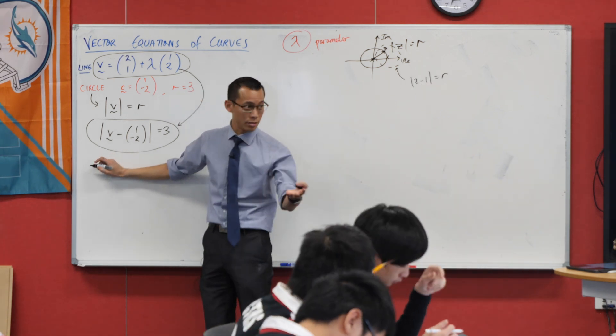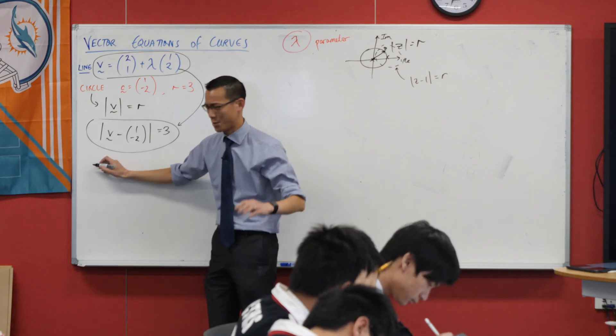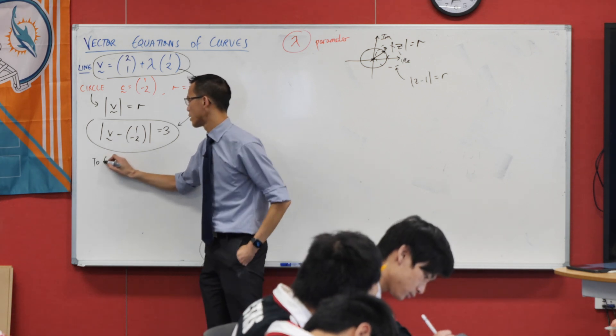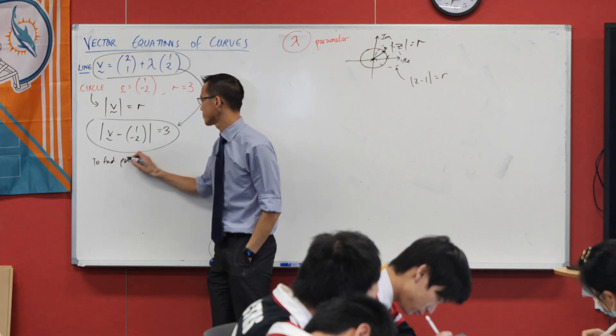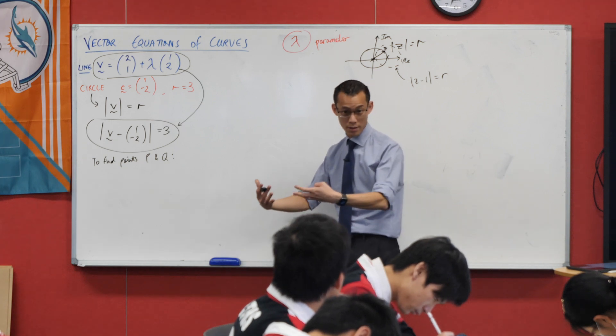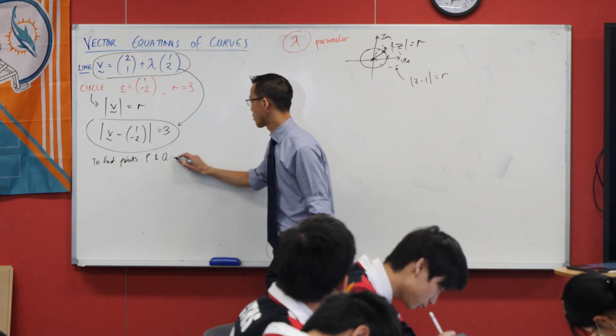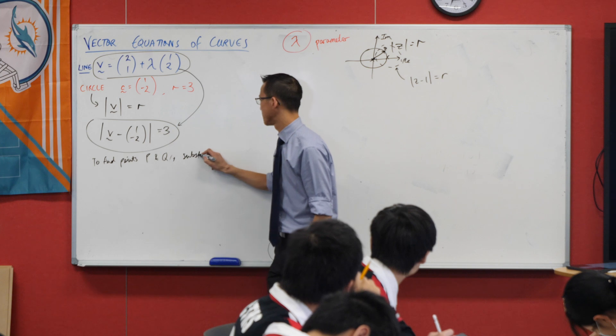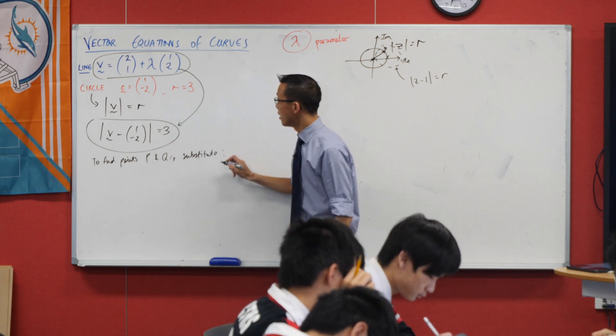I'm going to write down, it's always clear, it's good to be clear and say what I'm doing here. To find points of intersection, which in this case are P and Q, I'm going to solve simultaneously. Might write, substitute.